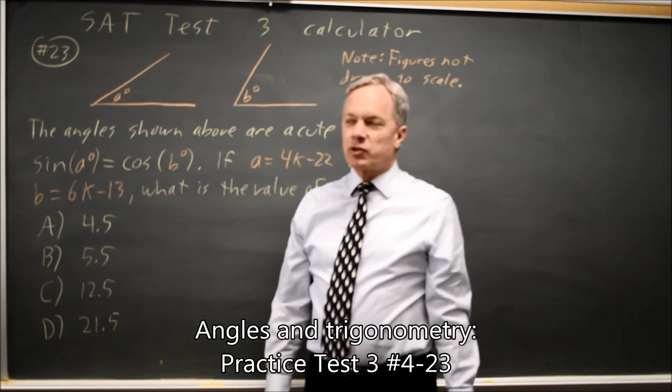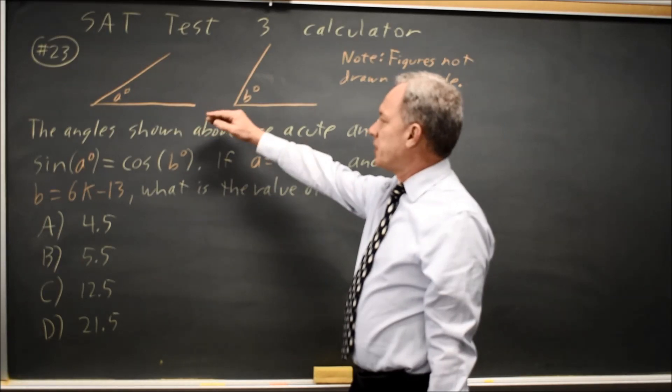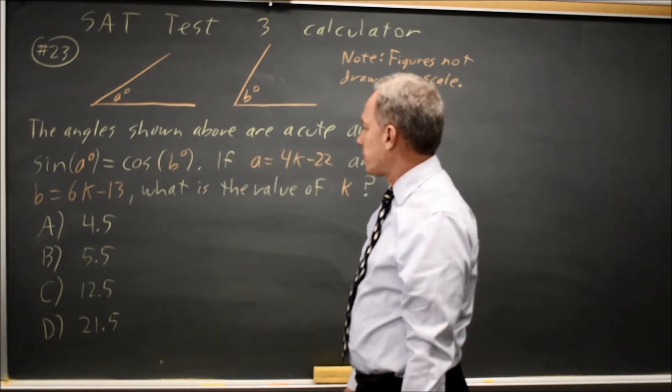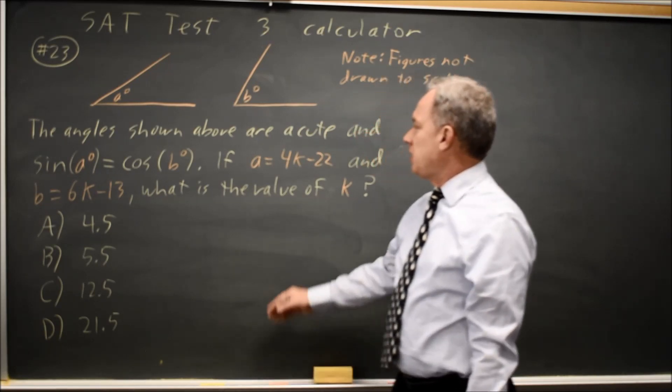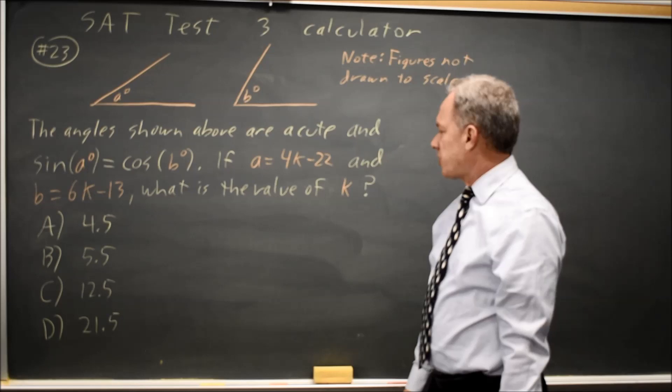This is SAT Test 3, Calculator Question number 23. The College Board gives us two angles and says the sine of angle A is equal to cosine of angle B. If A is equal to this expression and B is equal to that expression, they want the value of k.